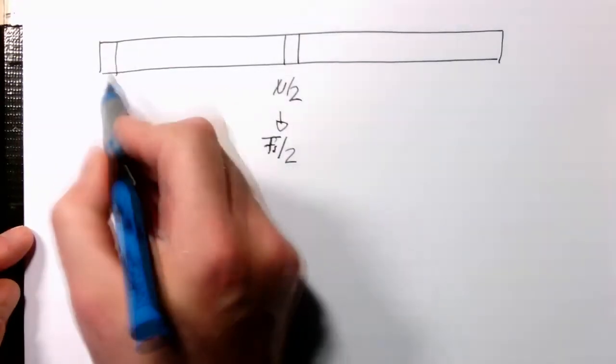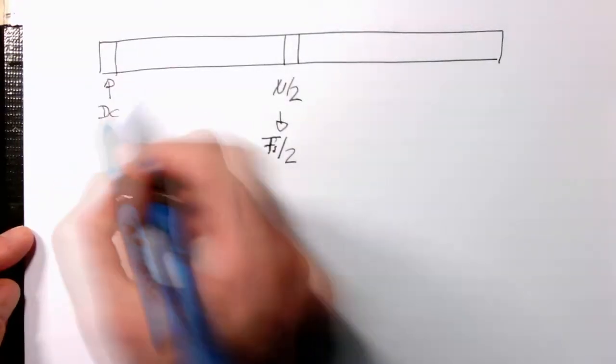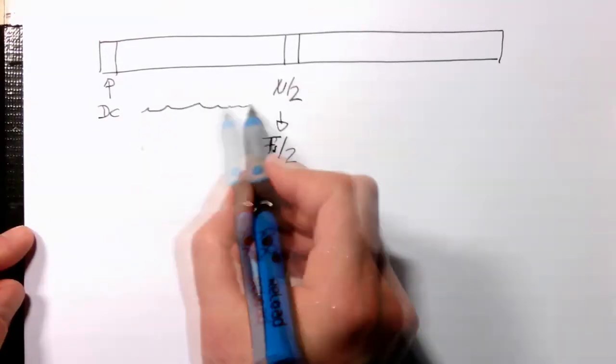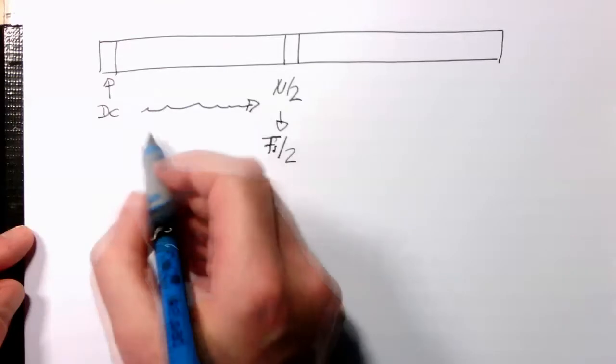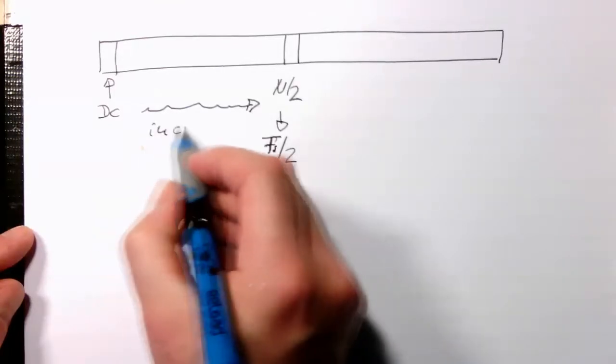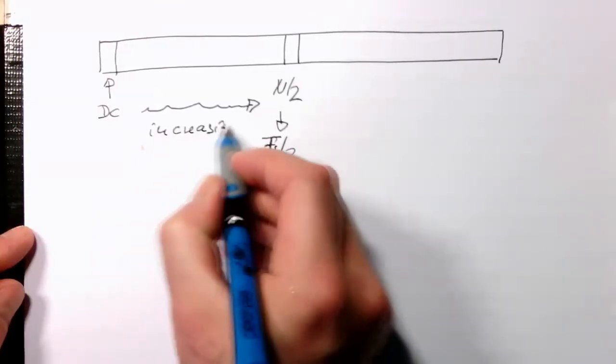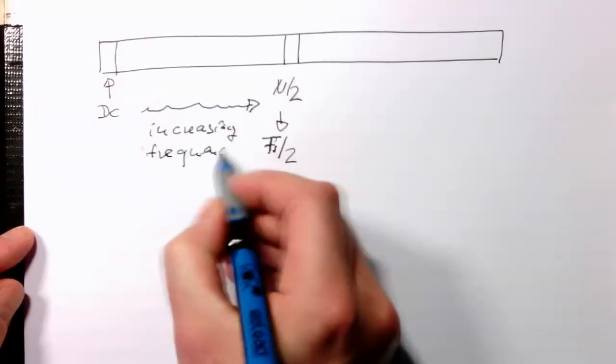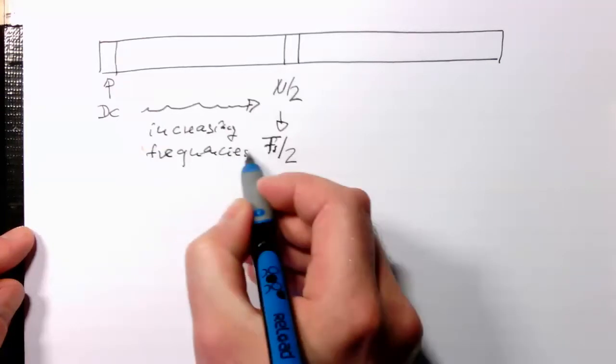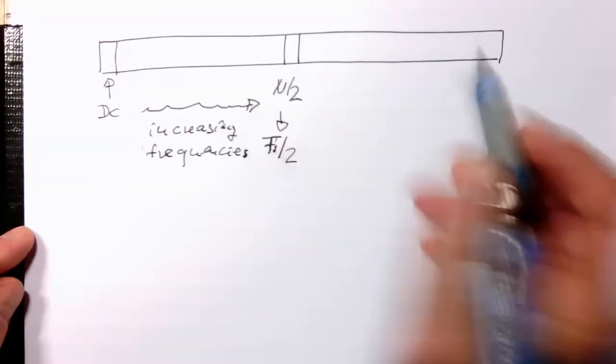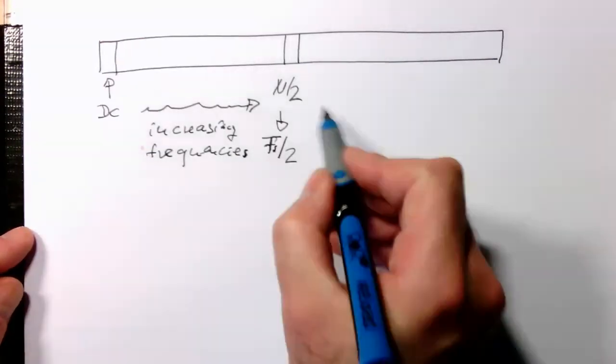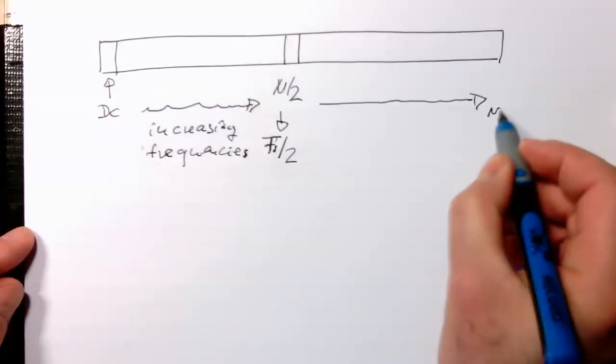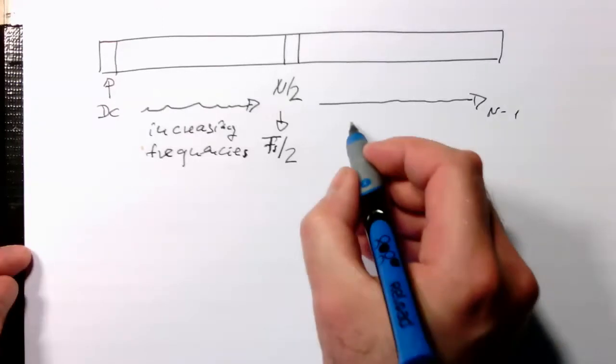Here the first sample was DC, and then from here to here we have increasing frequencies depending on the index number. Now from here to the very end, to N minus 1, we have decreasing frequencies.